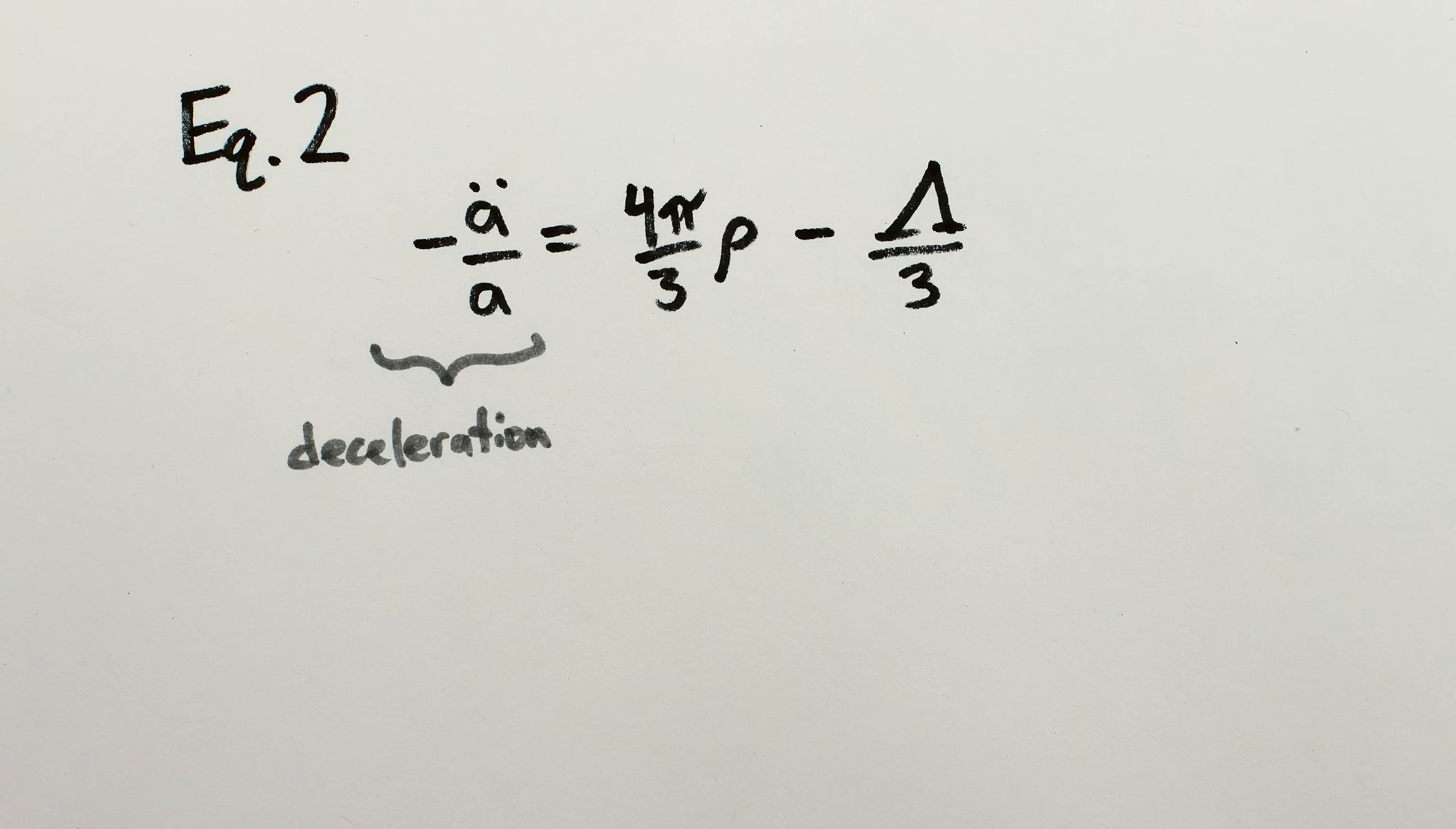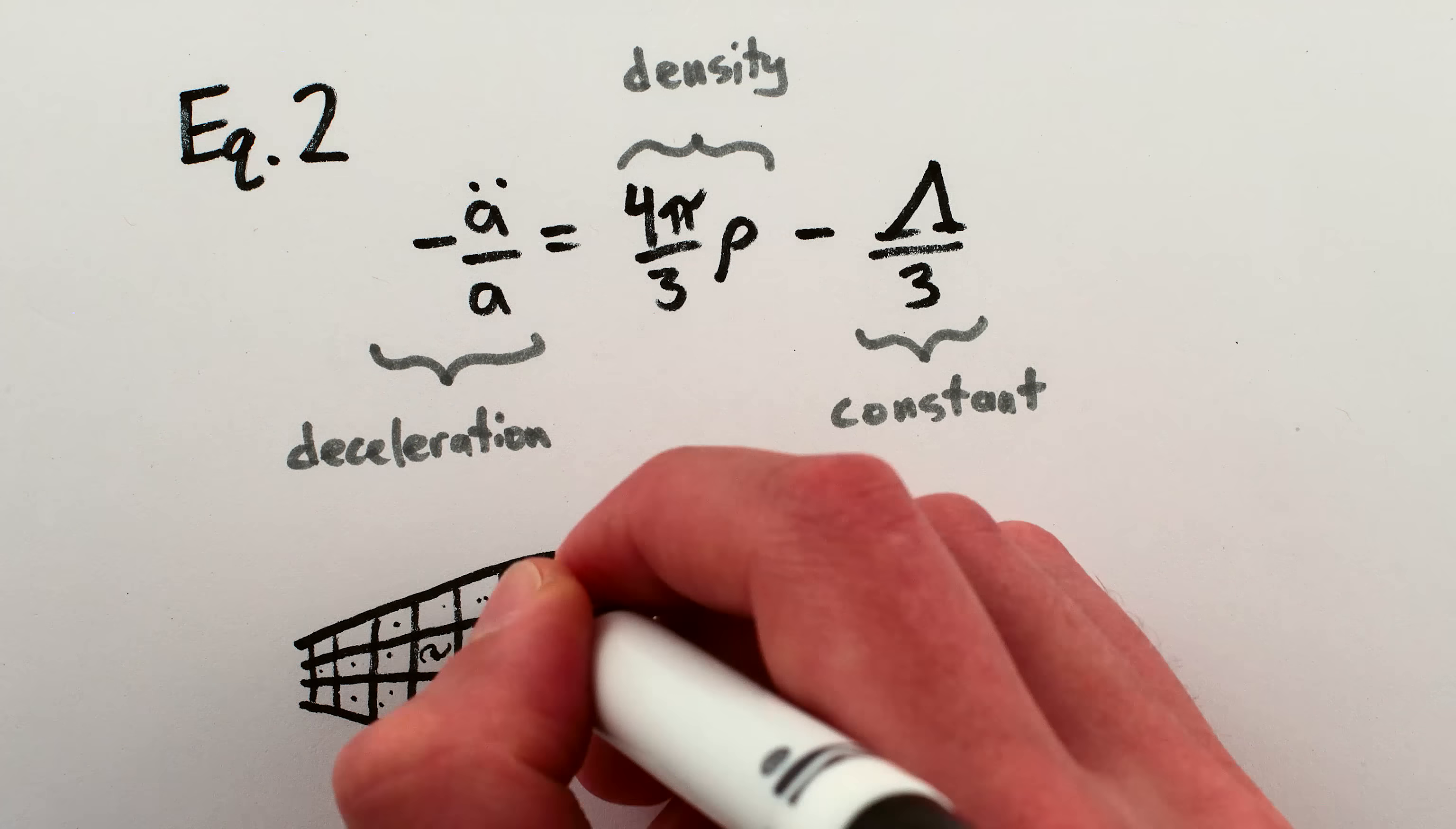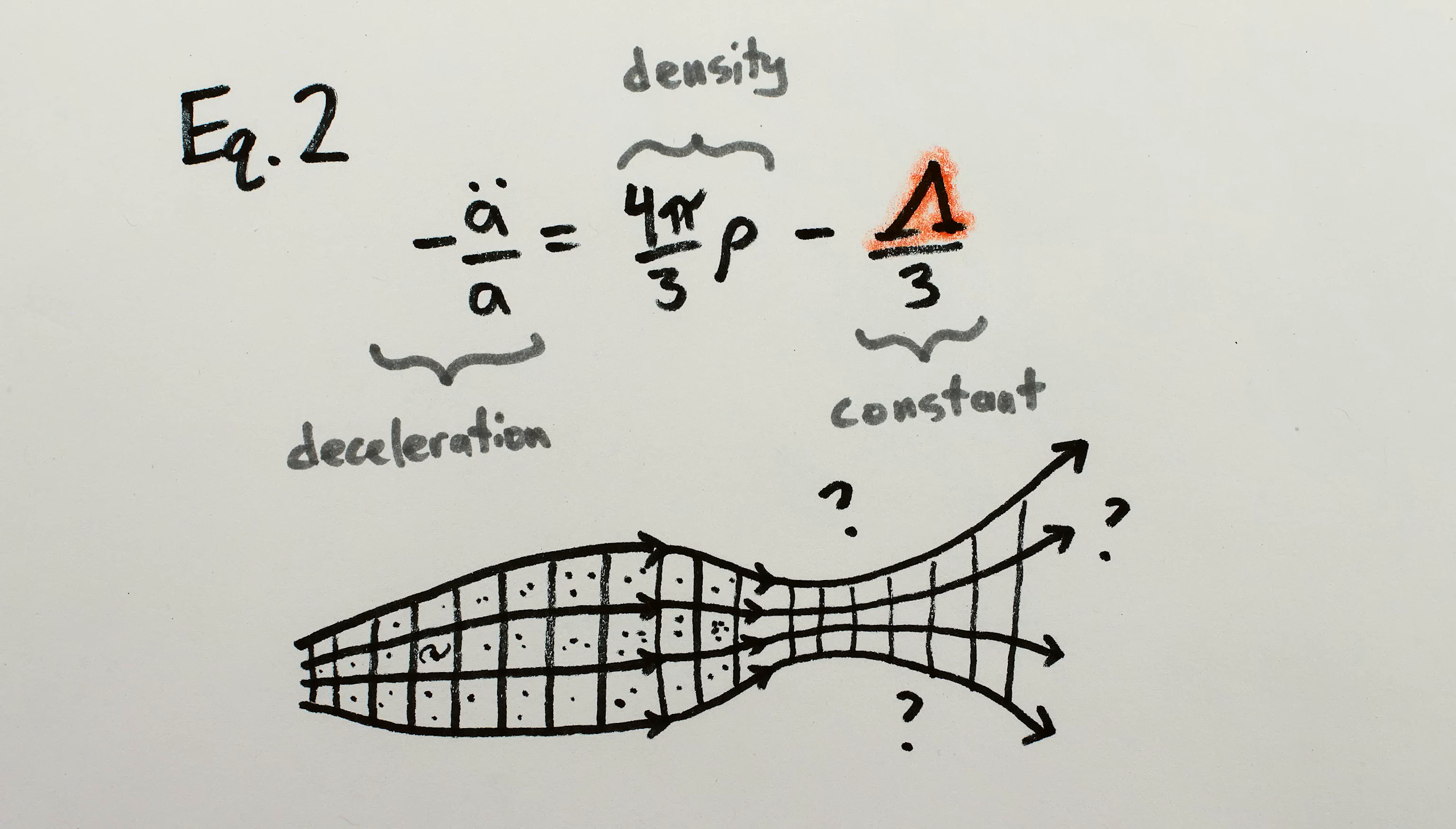The second equation says that the deceleration of the universe is proportional to its density, minus Einstein's constant. In other words, the stuff in the universe attracts itself gravitationally, so the universe would have a tendency to pull inwards on itself, slowing any expansion and possibly even contracting. Unless Einstein's constant were real, and had a value big enough to balance or overpower the gravitational attraction.